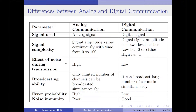The next parameter is the effect of noise during transmission. Analog communication suffers from noise during transmission, and therefore the effect of noise during transmission for analog communication is high, whereas for digital communication the effect of noise is quite low.